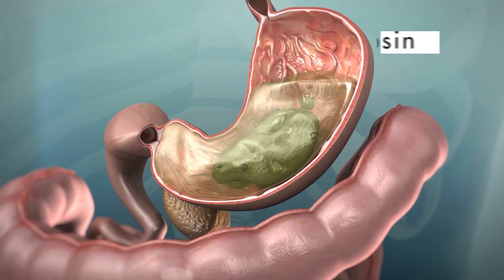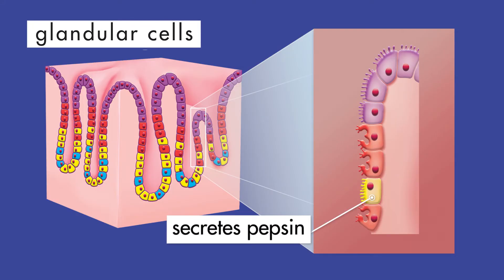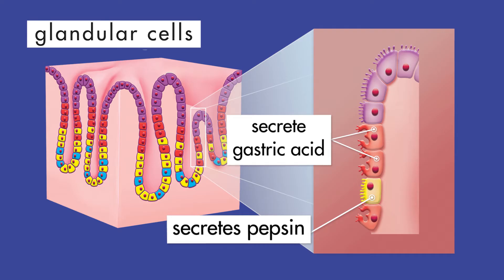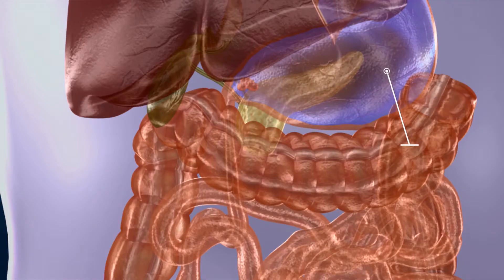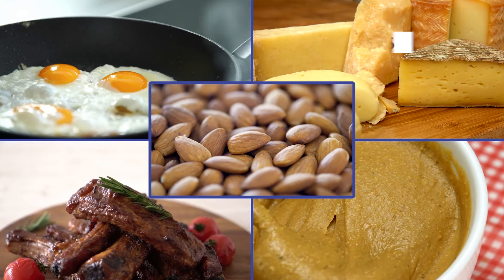One enzyme that digests food is pepsin. Glandular cells in the stomach secrete an inactive form of pepsin, which cannot do its job unless it is mixed with an acid. Other glandular cells in the stomach secrete gastric acid to activate the pepsin. One of the main components of gastric acid is hydrochloric acid, with the chemical symbol HCl.